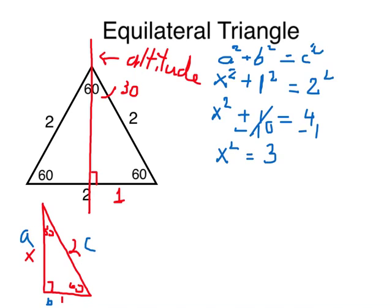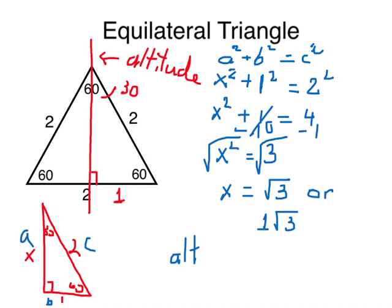To solve for x, I want to undo the power of 2, square root both sides. This becomes x, which is square root of 3. So rather than write just plain square root of 3, I'm going to rewrite this as 1 times square root of 3. Because 1 times square root of 3 is just square root of 3. So there we just found the altitude, which is that line that cut the equilateral triangle down the middle. This is 1 square root of 3.